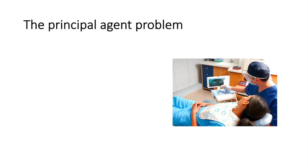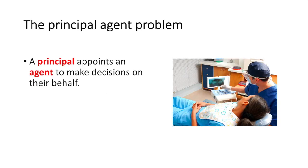A principal is an entity that appoints another entity, an agent, to make decisions on their behalf. For example, in this picture on the right, when you visit the dentist, you are appointing the dentist to take care of your teeth. If they make a suggestion, you're likely to follow it if you trust the dentist.